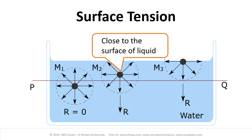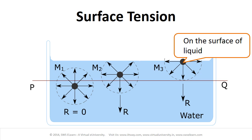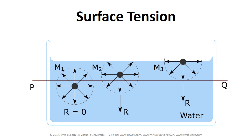And in the third situation, the molecule M3 lies on the surface of the liquid. In these diagrams, the arrows show the force of attraction due to neighboring molecules. The dotted circles show the sphere of influence.